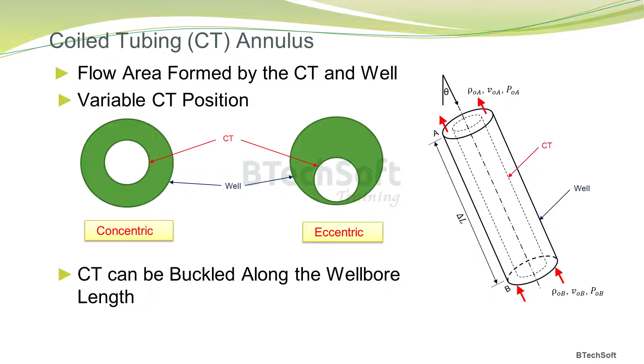When the coil tubing is concentric within the well bore, the axis of the coil tubing and the well coincide, whereas in an eccentric position, the coil tubing and the well bore axis are separated by a small distance. In addition, the coil tubing can be buckled along the well bore length.